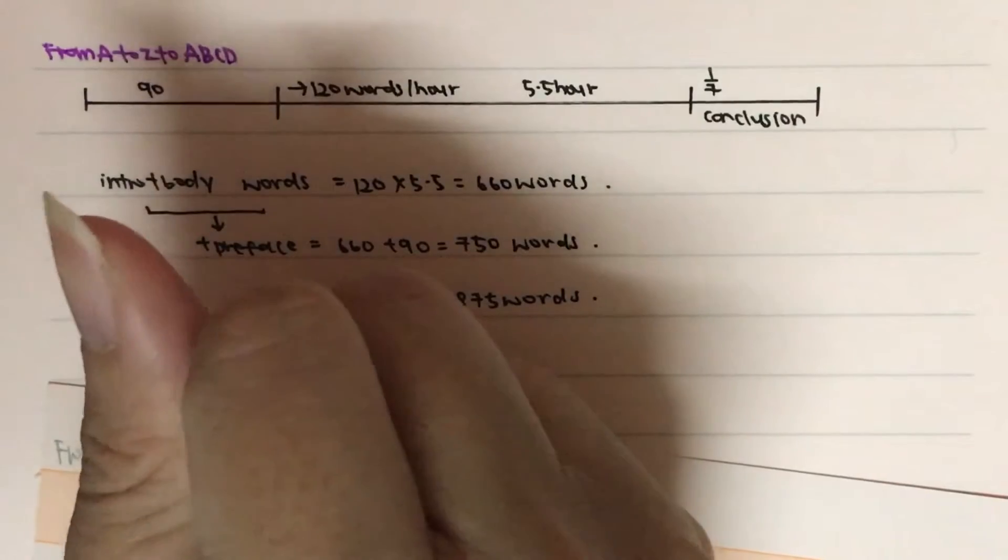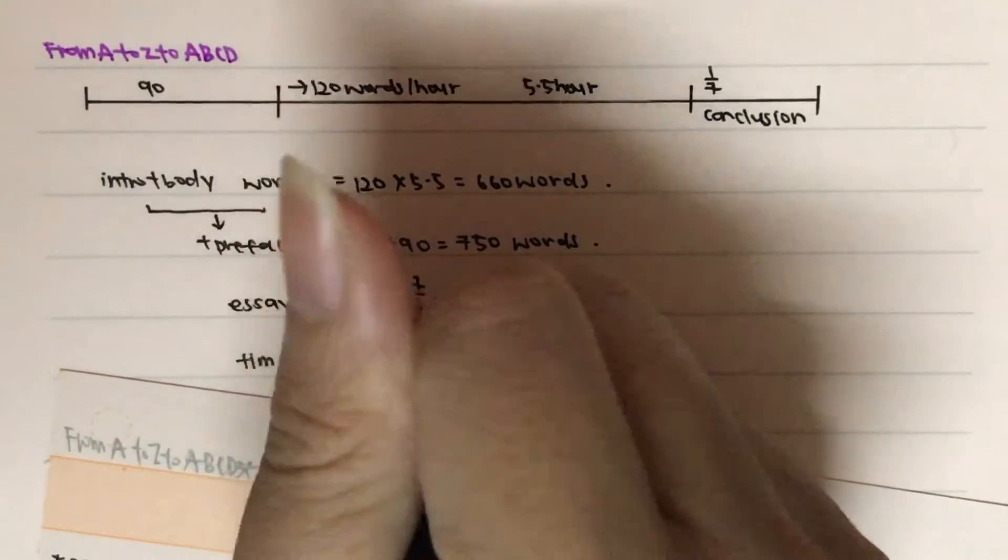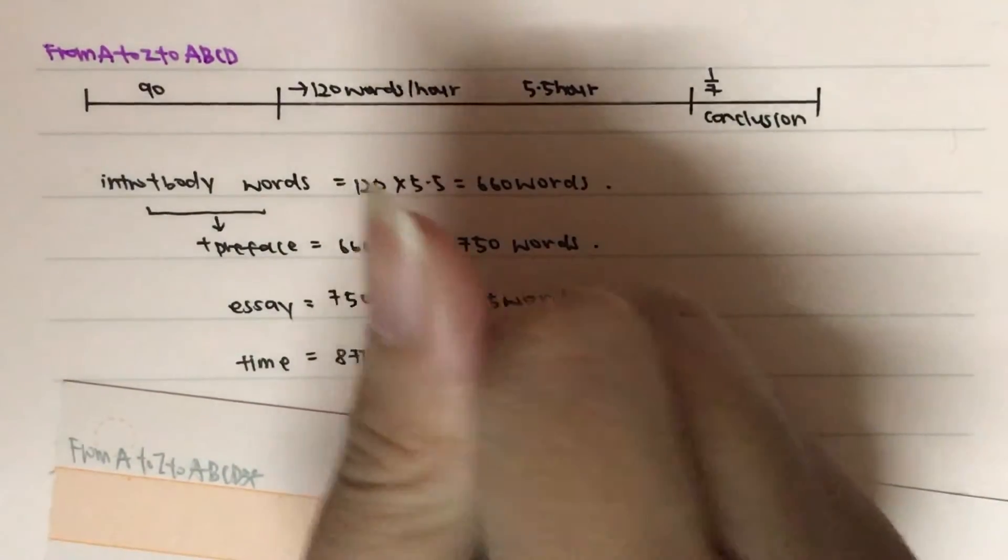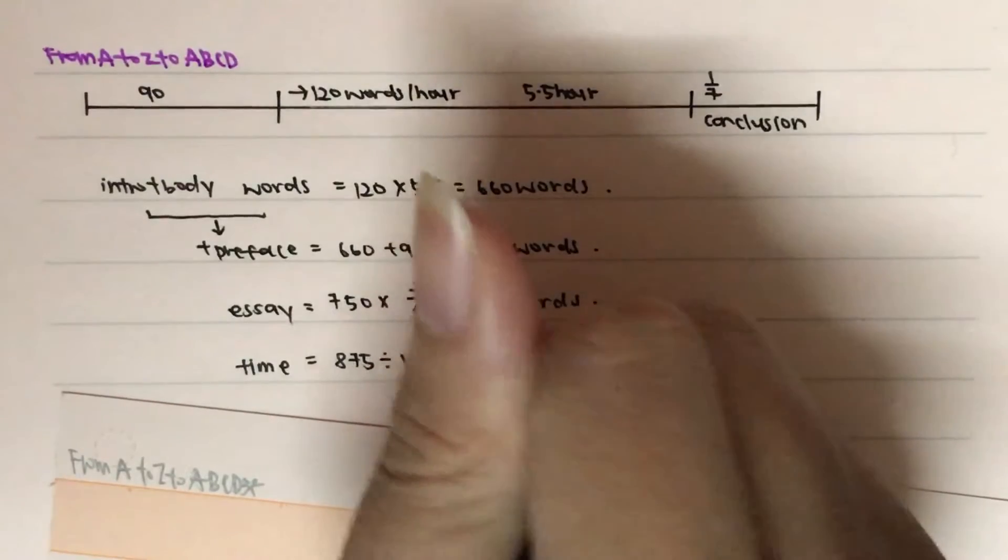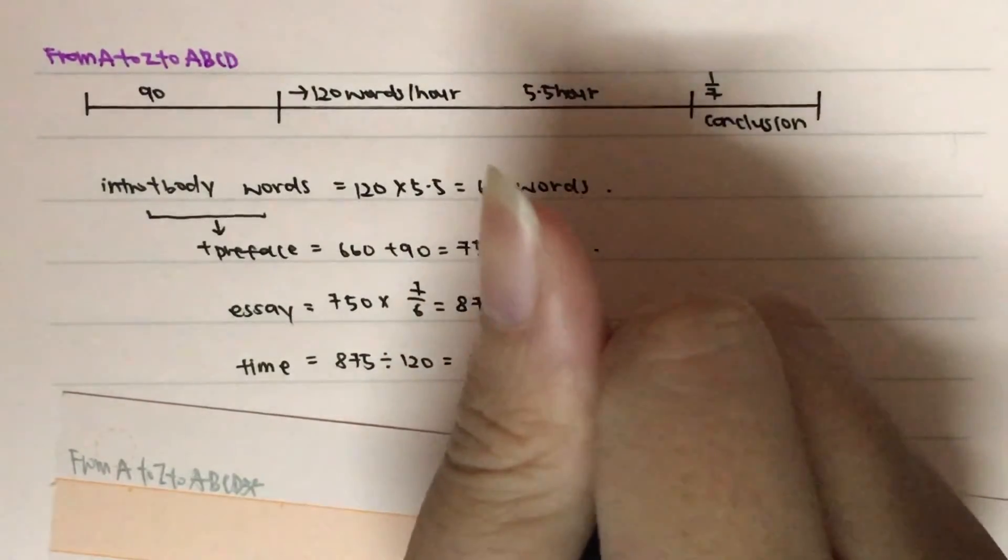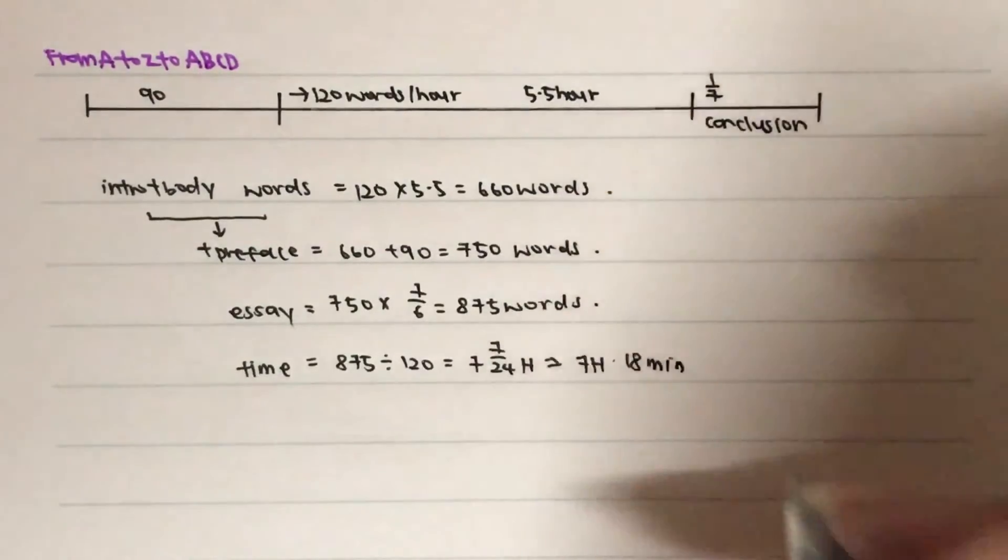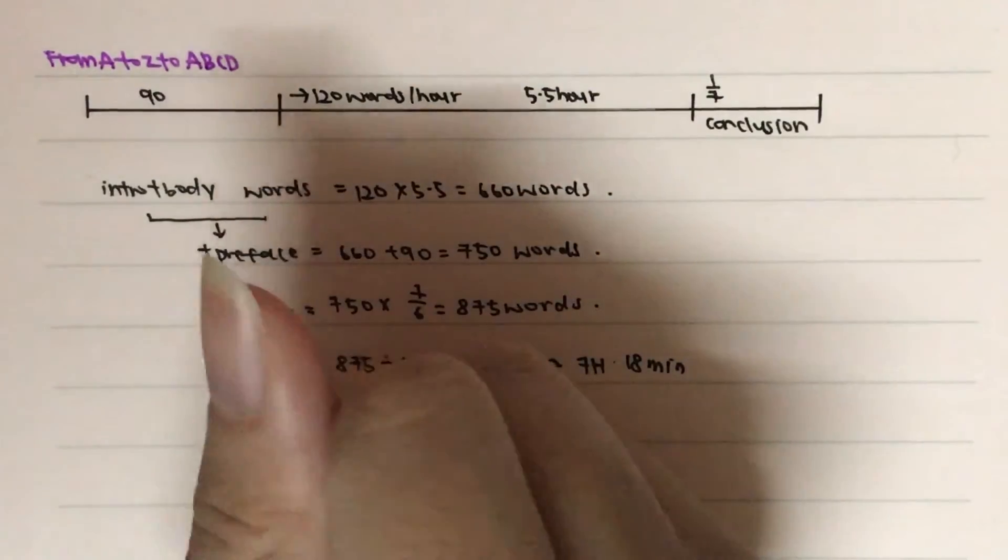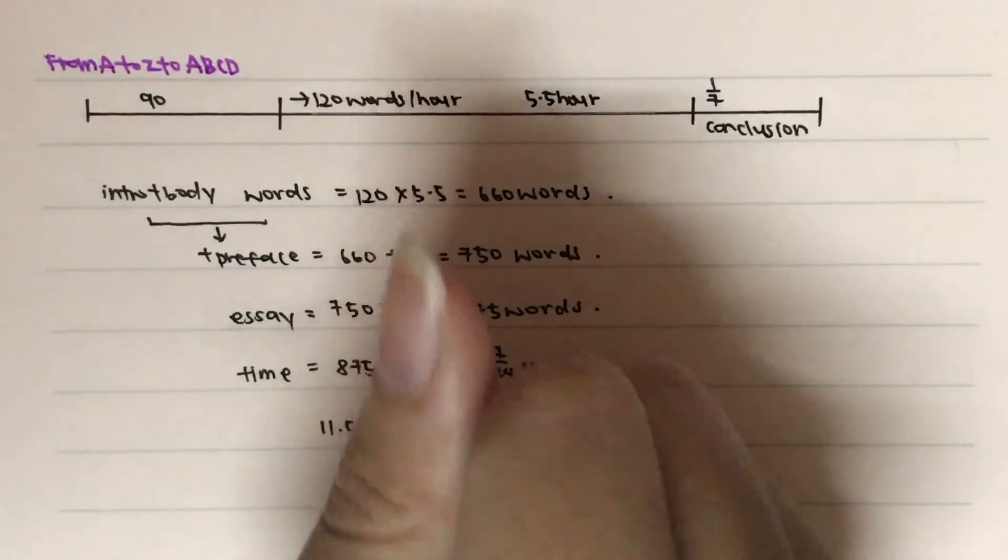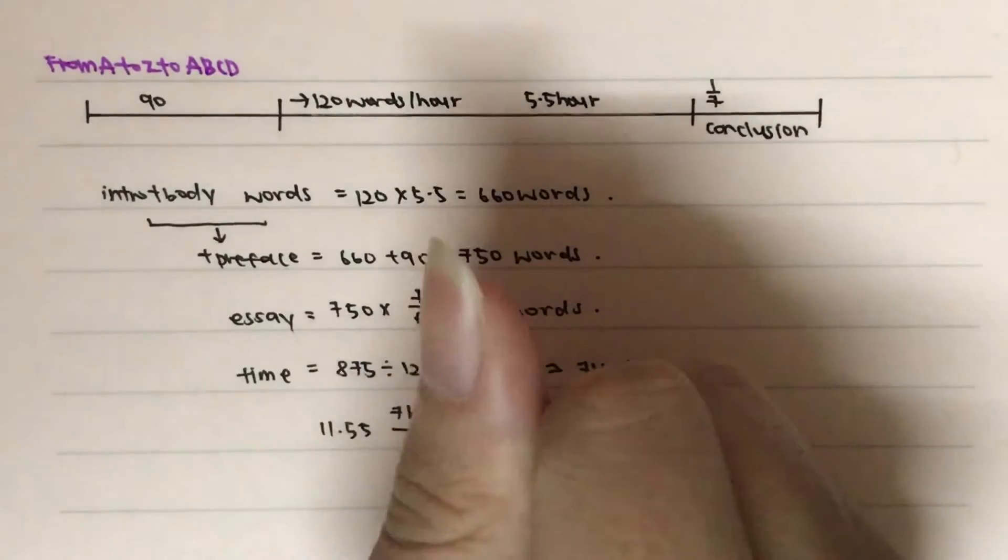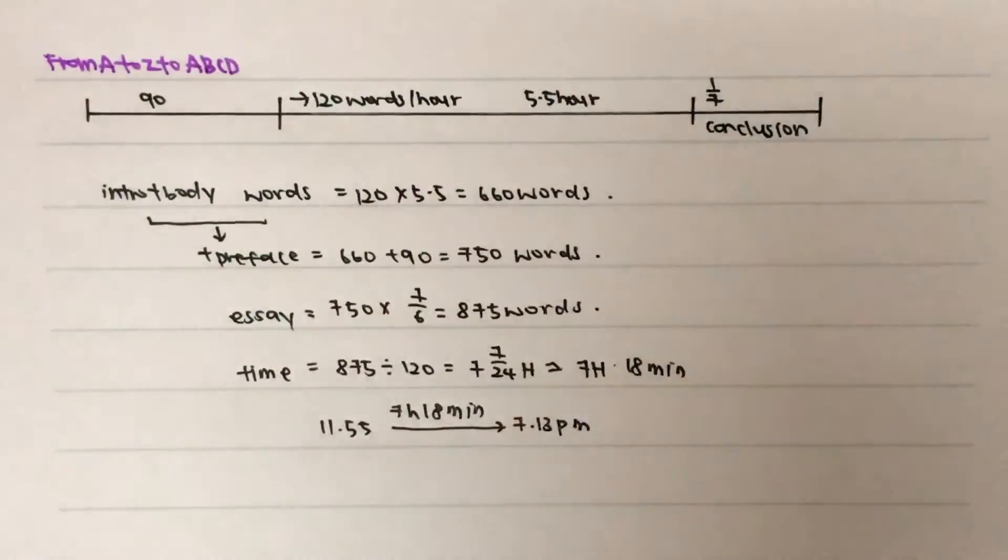Then the time taken will actually be equal to the total number of words divided by the writing speed of 120 words per hour. This will give us 7 and 7 over 24 hours, which is about, we round up, so it's actually 7 hours and 18 minutes. So it's 11:55 plus 7 hours, 18 minutes. This will give us 7:13 PM.